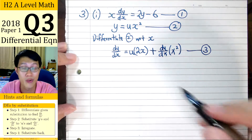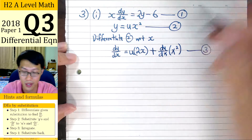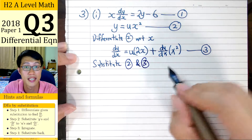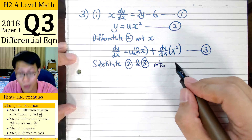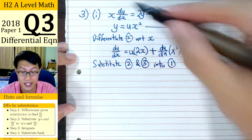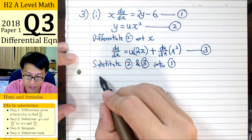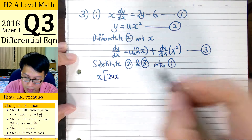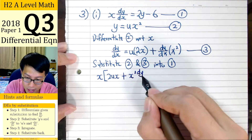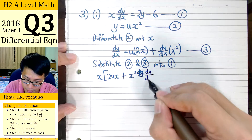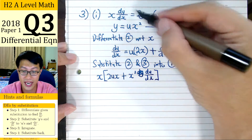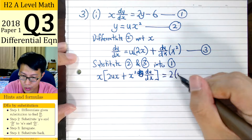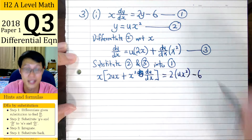We now proceed to substitute whatever we have into the original DE, which is equation 1. We substitute equations 2 and 3 into the original DE. So x dy/dx — equation 3 gives us what dy/dx is — so we have x multiplied by the entire right-hand side of equation 3: 2ux plus x squared du/dx. And x dy/dx equals 2y. Since y is ux squared from equation 2, this becomes 2ux squared minus 6.